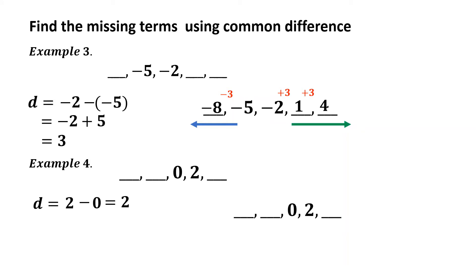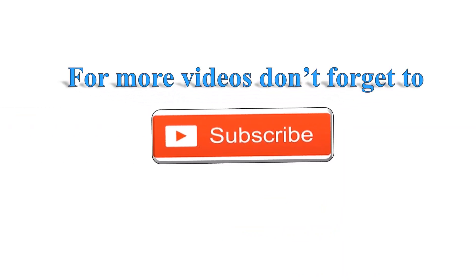Now let us find the missing terms. To the right: 2 plus 2 equals 4. To the left: 0 minus 2 equals negative 2, then negative 2 minus 2 equals negative 4. Therefore, the arithmetic sequence is negative 4, negative 2, 0, 2, and 4. For more videos on mathematics, please don't forget to subscribe.